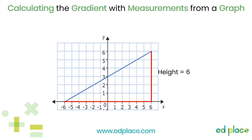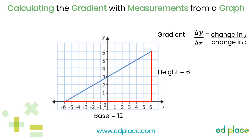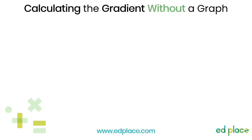Next, we measure the height and base of the triangle. A common mistake students make is to measure the lines with a ruler — this will give incorrect numbers if the scale on the axes is not in centimetres. Always use the numbers on the axes to work out the lengths; it really is as simple as counting squares. So the height of this triangle is 6 and the base is 12. The equation of the gradient is delta y over delta x — the change in the y coordinates divided by the change in the x coordinates, which is just the height divided by the base. So 6 divided by 12 is a half, meaning the gradient of this line is a half.